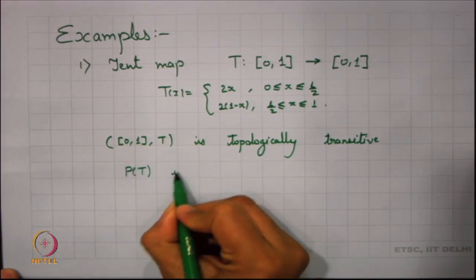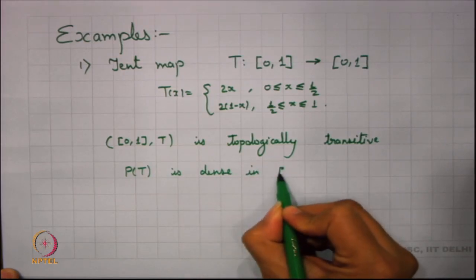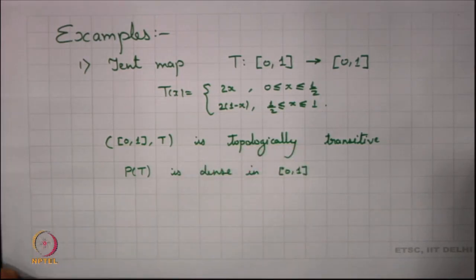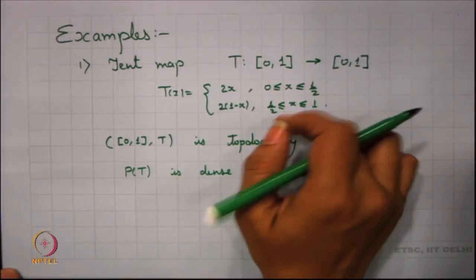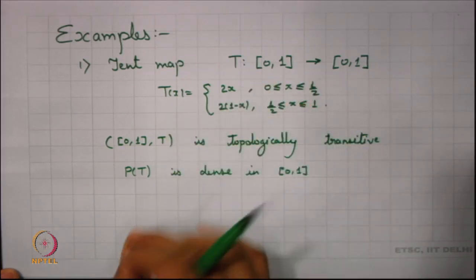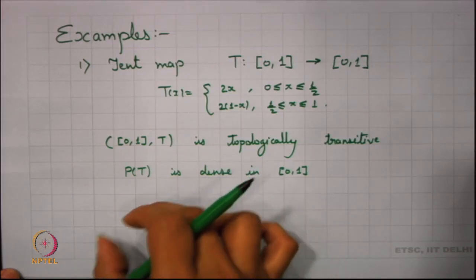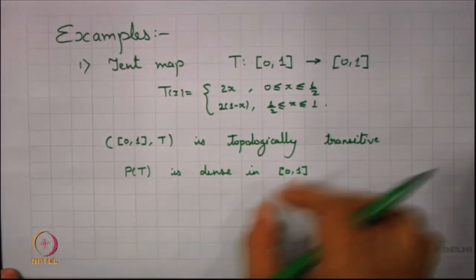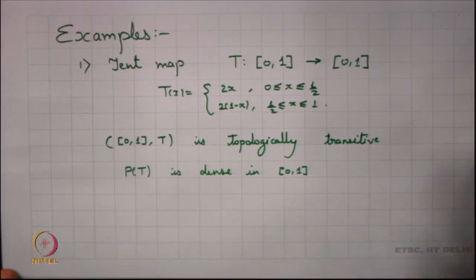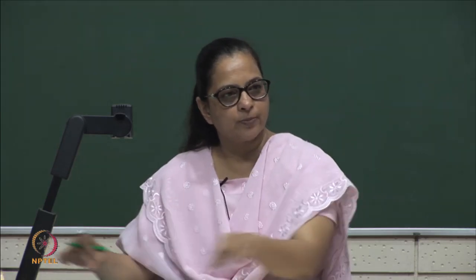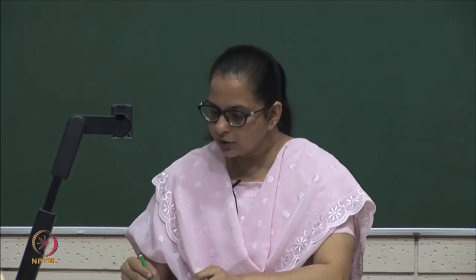We have that P(T) is dense in [0,1], and also in one of the classes we had seen that this is sensitive. If you try to look into the derivative, except at the point one-half, the derivative at each and every point is 2. That means if you have two points close by, the iterates will be moving at twice the distance between them, and that factor of 2 keeps on increasing. So at some point they would have reached at least a distance of one-half between them. We have a delta such that starting with any point there is a neighborhood point which moves delta apart at some instant. So this system is also sensitive.